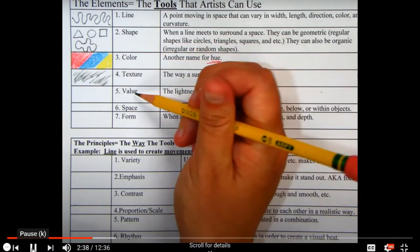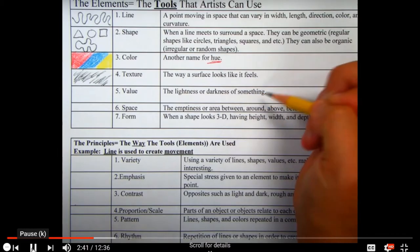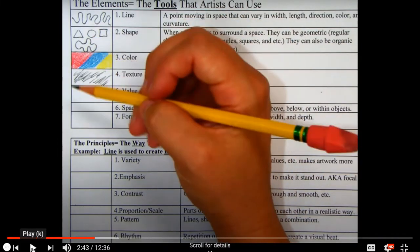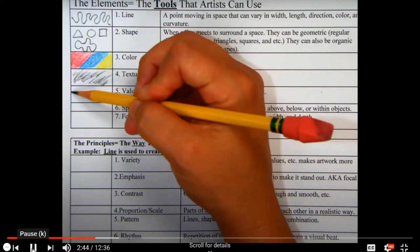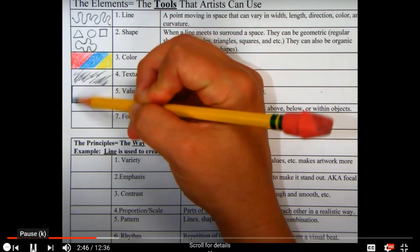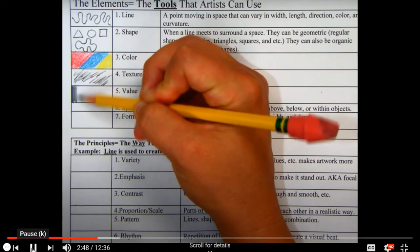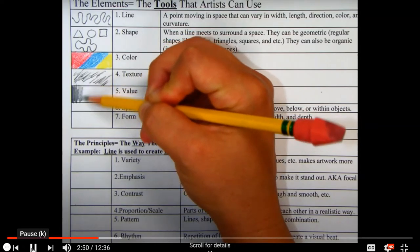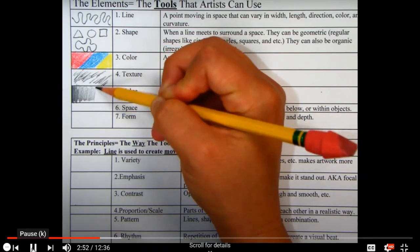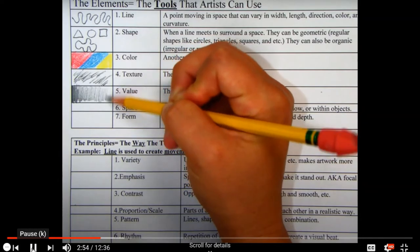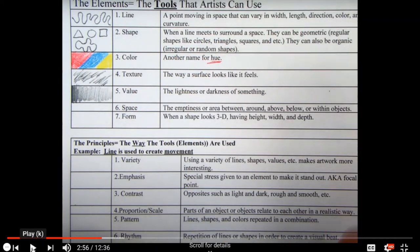Now value is the lightness or darkness of something. El valor es la claridad o la oscuridad de algo. You can go ahead and do a value scale that goes from dark to light. Pueden dibujar una escala de valor de oscuro a claro, así como lo estoy haciendo yo.